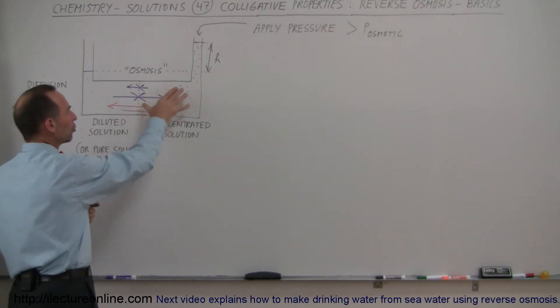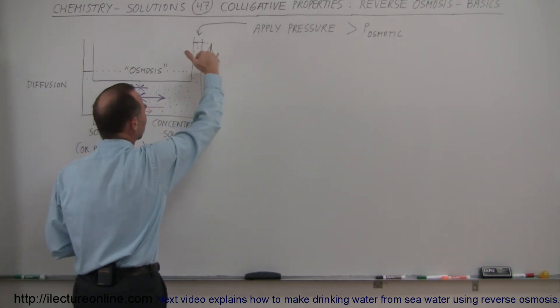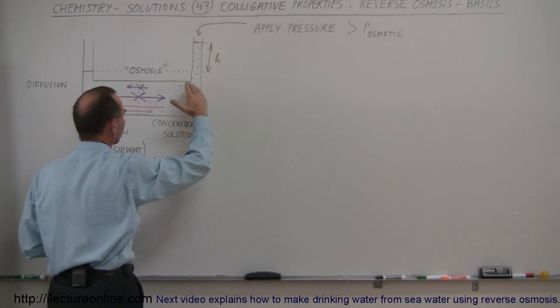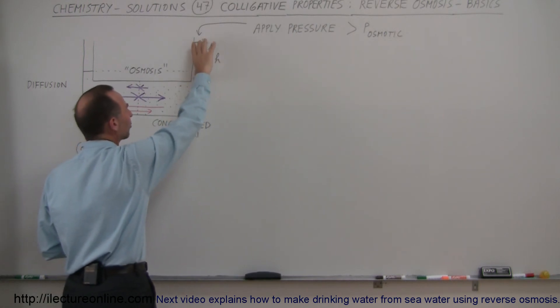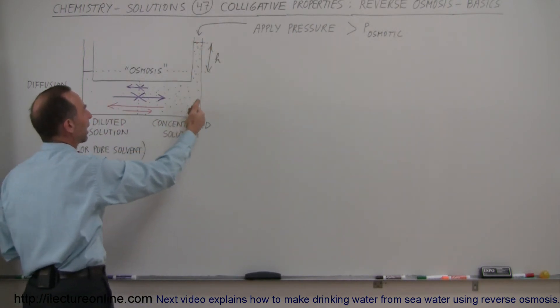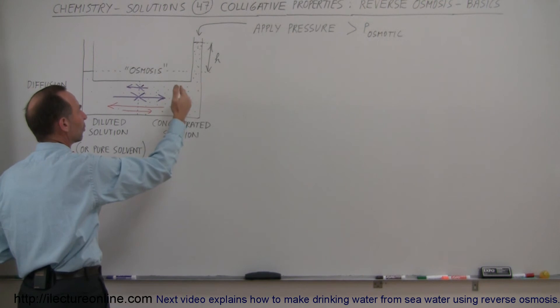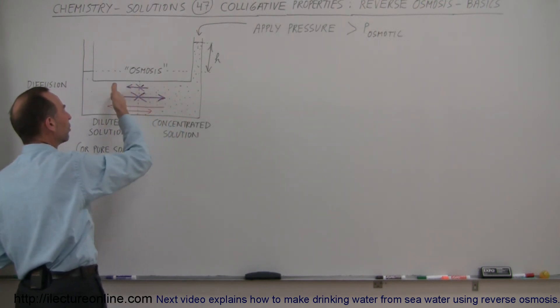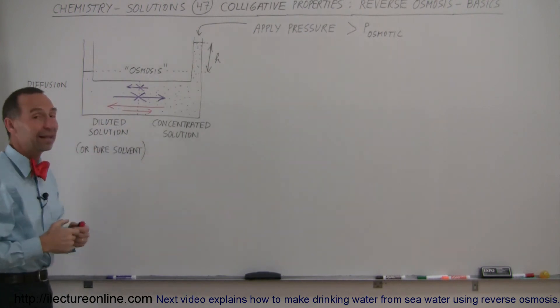So what we can do is we can put ocean water right there, apply a great amount of pressure, push so hard that we overcome the osmotic pressure of seawater, and we actually can push clear water or pure water through the semipermeable membrane to the other side and then collect on the other side and then have drinking water.